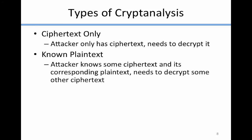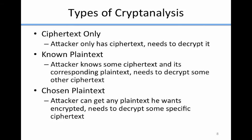The second type of cryptanalysis is a known plaintext attack, where the attacker knows some ciphertext and its corresponding plaintext, and wants to decrypt some other ciphertext. This is a more powerful attack — the attacker can do more if they know some plaintext-ciphertext pairs. The third type is a chosen plaintext attack, where the attacker can get any plaintext they want encrypted, but has some specific ciphertext they want to decrypt. This is an even more powerful attack. So our three types are: ciphertext only, known plaintext, and chosen plaintext.